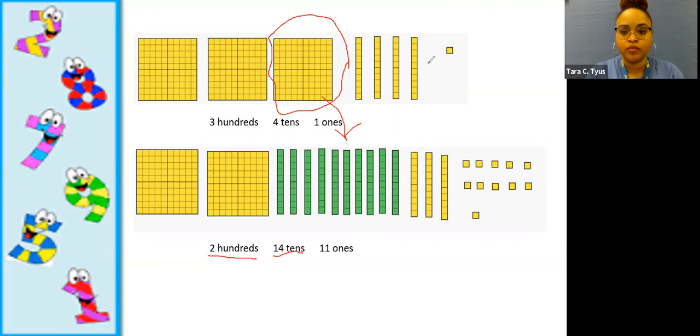Then we also learned that we can unbundle or decompose this 10 into ones. And we have 10 ones. So this two hundreds, 14 tens, and 11 ones that we have now.